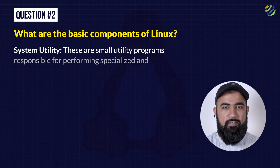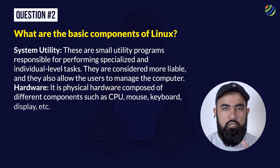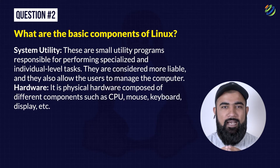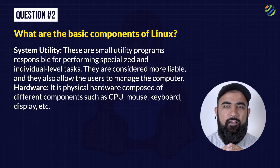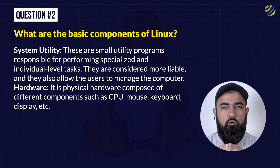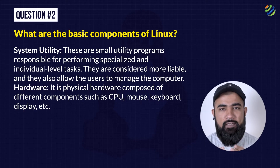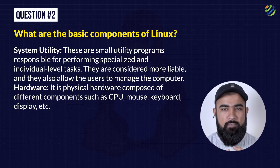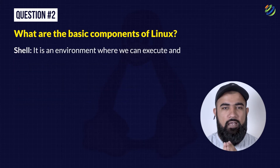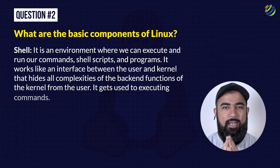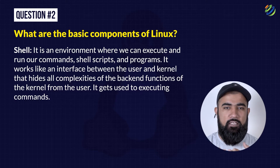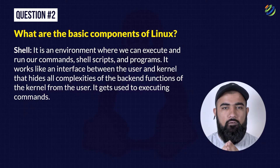Third, System Utility — these are small utility programs responsible for performing specialized and individual-level tasks. They are considered more reliable and also allow the user to manage the computer. Fourth, Hardware — it is the physical hardware composed of different components such as CPU, mouse, keyboard, display, etc. Fifth, Shell — it is an environment where we can execute and run our commands, shell scripts, and programs. It works like an interface between the user and kernel, hiding all complexities of the backend functions of the kernel from the user, and gets used to execute different commands.